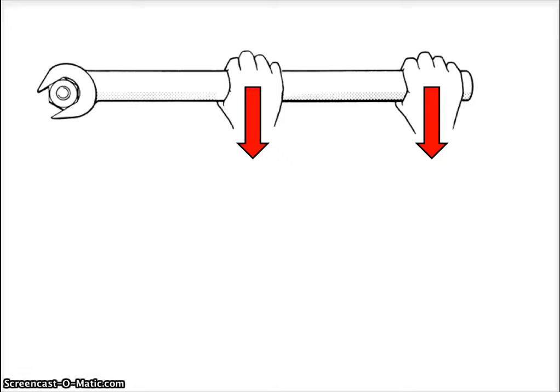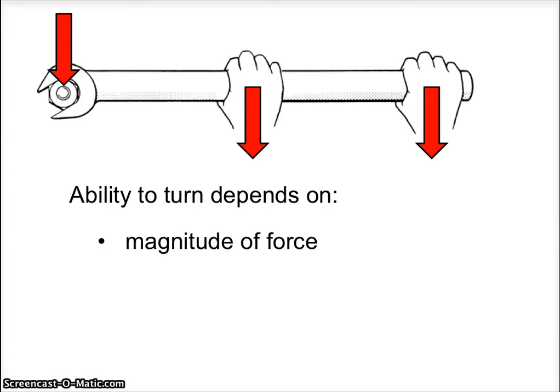So we can already see that the location impacts how much turning you do. I mean, if you tried to push right at the bolt itself you would absolutely get no turning at this location right here. So there are two things the ability to turn depends on. The first thing is the magnitude of the force. How big is the force?